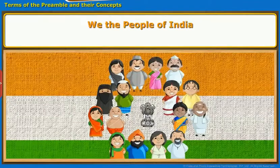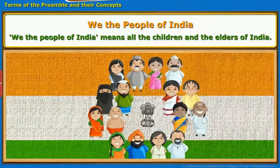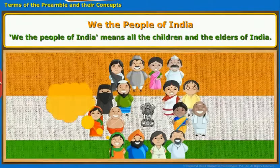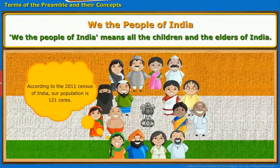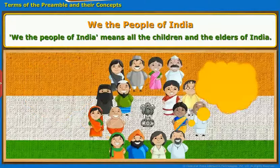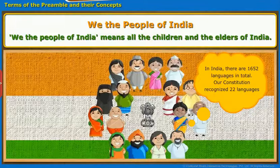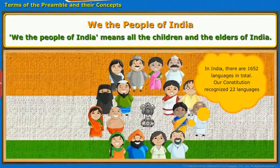We the People of India means all the children and the elders of India. According to the 2011 Census of India, our population is 121 crores. In India, there are 1652 languages in total. Our Constitution recognized 22 languages.